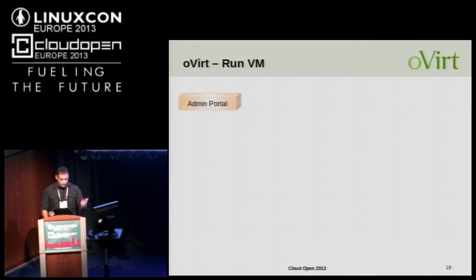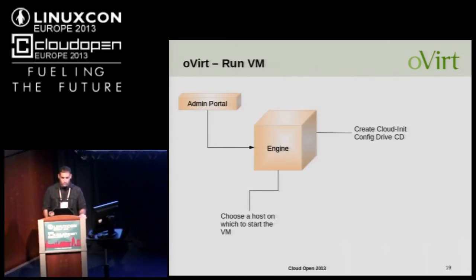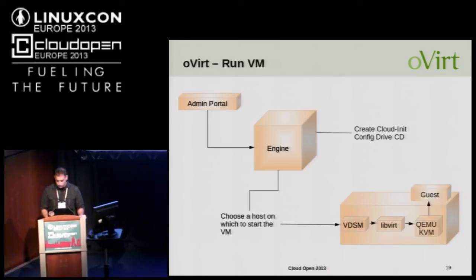How does this work? The admin fills out all the information in the screen and asks to run the VM. The engine first creates the cloud-init config drive — formatted so cloud-init knows to read it. Then the scheduling mechanism finds the best host according to the scheduling policy. Once we have it, we ask VDSM to create the VM. VDSM uses libvirt, creates the libvirt XML, and we have a QEMU process with our VM running, hopefully with cloud-init executing inside.